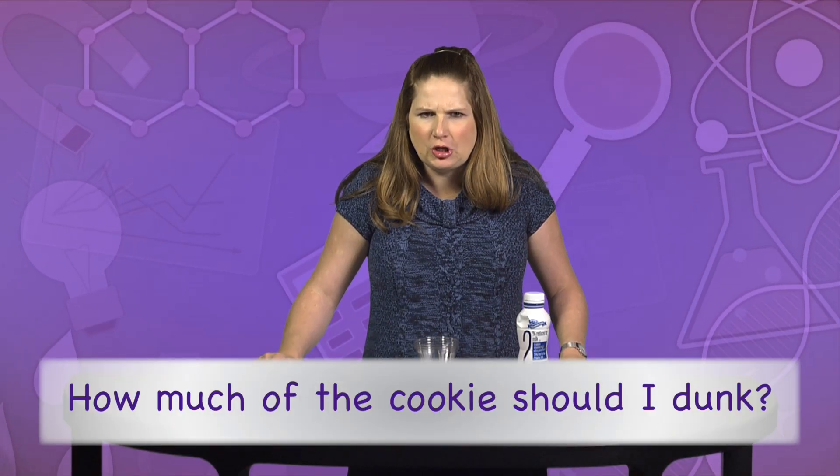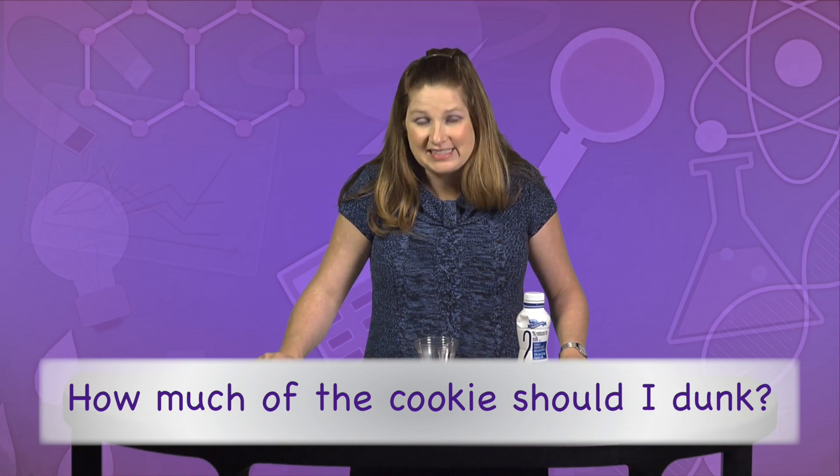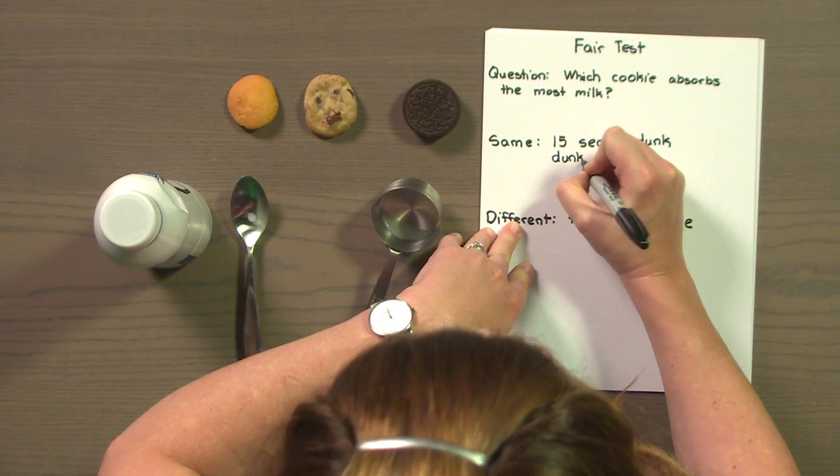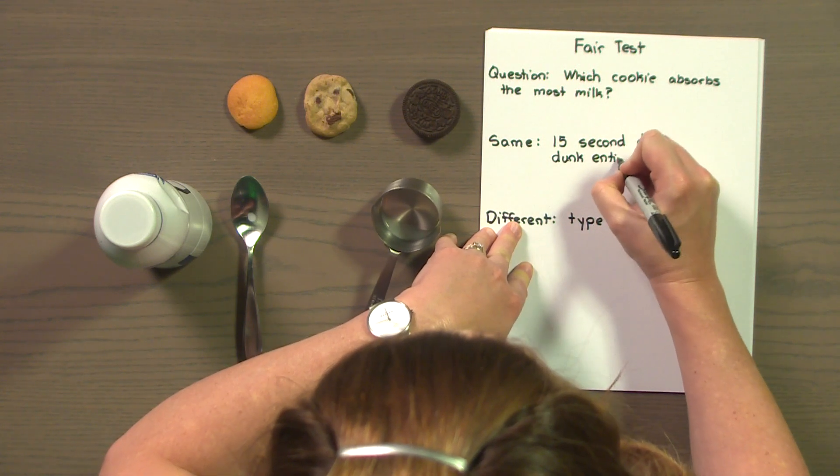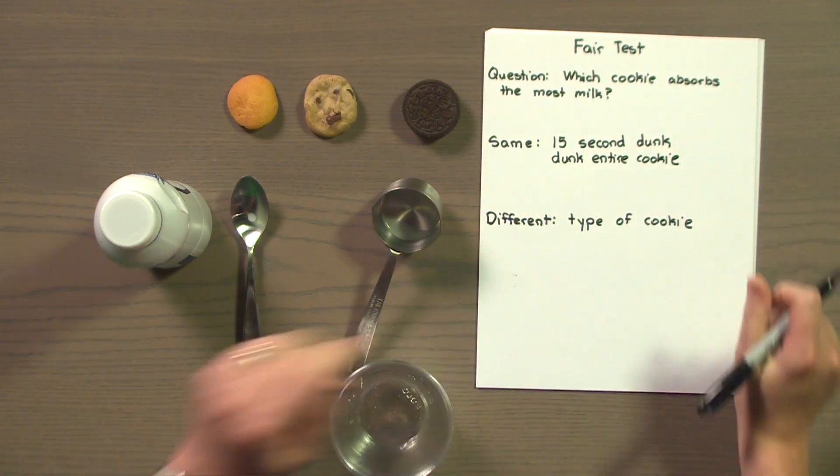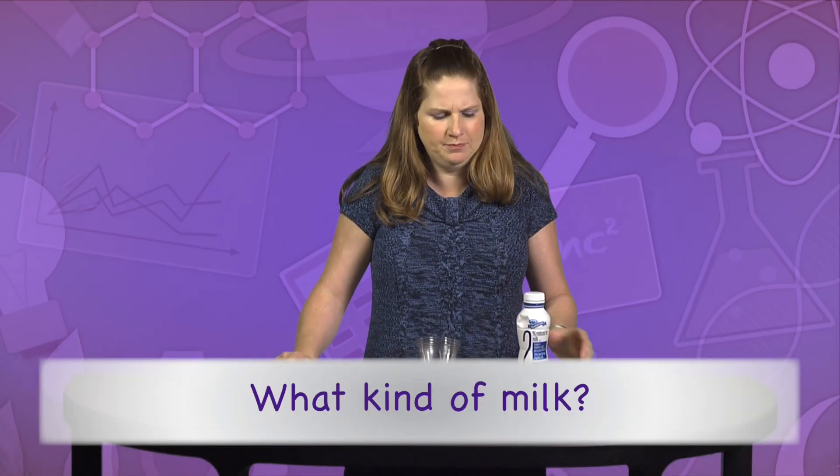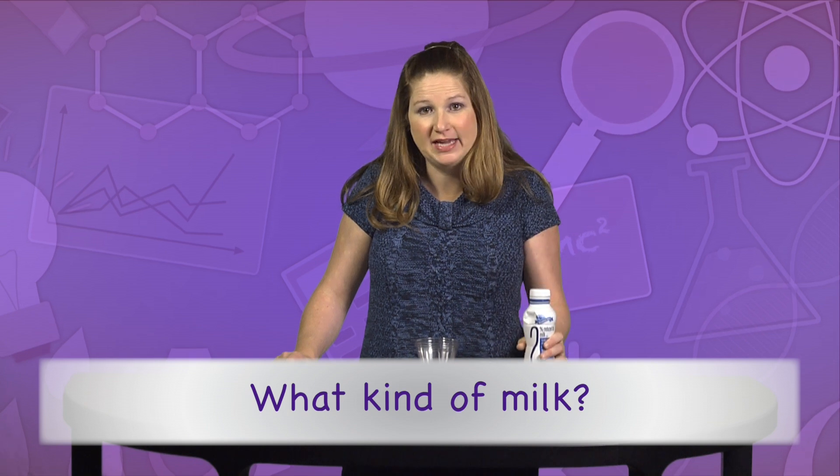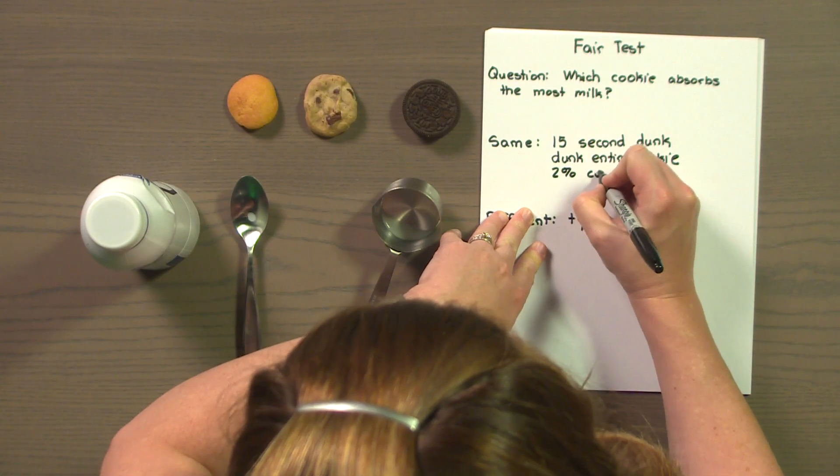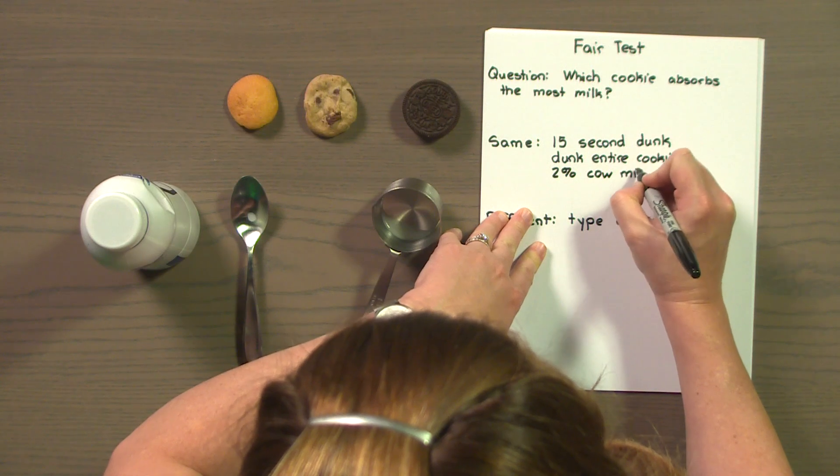How much of the cookie should we dunk in? I say the whole cookie should be in the milk. Dunk entire cookie. What kind of milk? Well, here I have 2% cow milk.